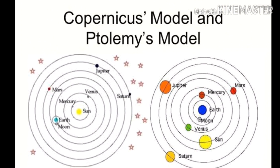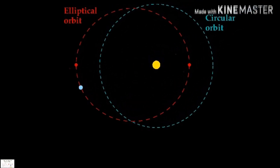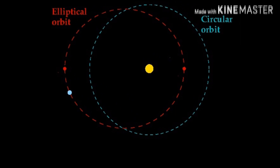Galileo observed Jupiter through a telescope and found that several moons orbited Jupiter. Kepler modified Copernicus' theory and suggested that the planets do not revolve in a circular path; rather they follow an elliptical path. This hypothesis was considered ad hoc and repugnant, as an ellipse is less perfect than a circle.